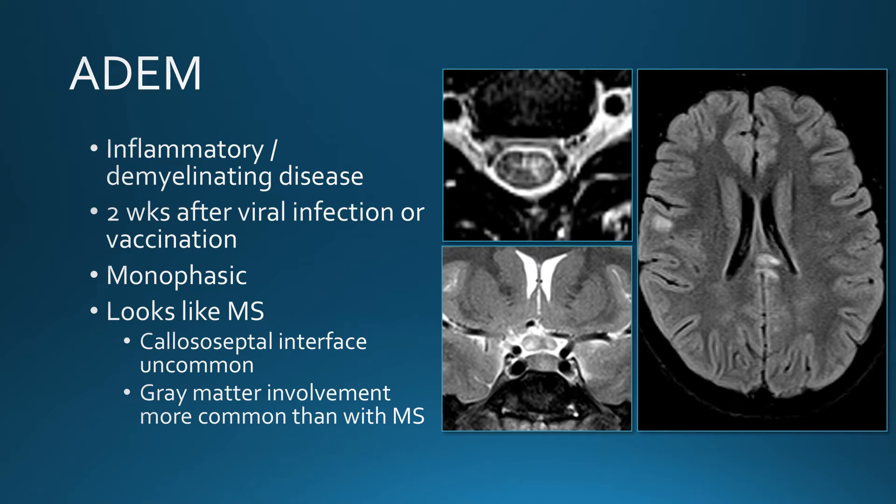ADEM typically occurs a couple of weeks after a viral infection or vaccination. It looks similar to MS, although you usually don't see involvement of the callosal-septal interface. Gray matter involvement is much more common with ADEM than with MS, and of course it's typically a monophasic disease.